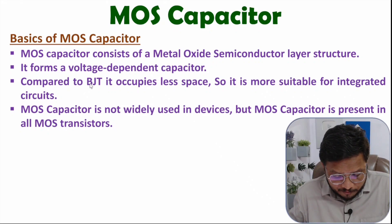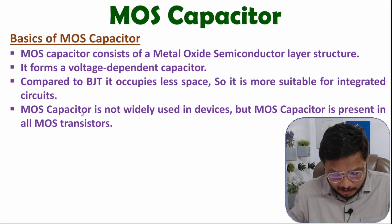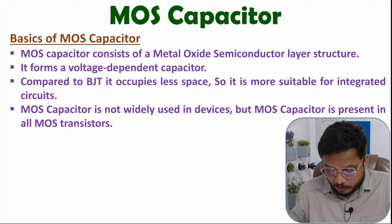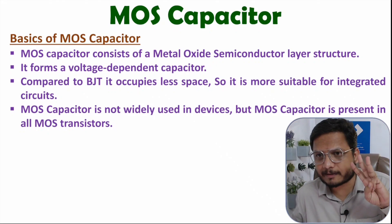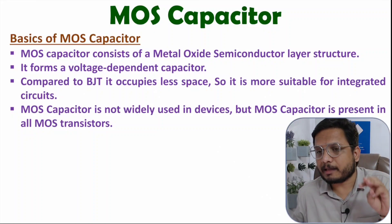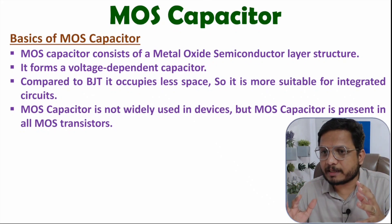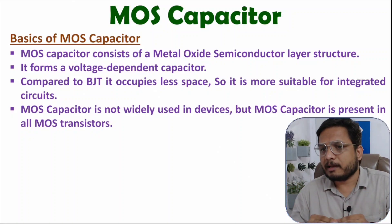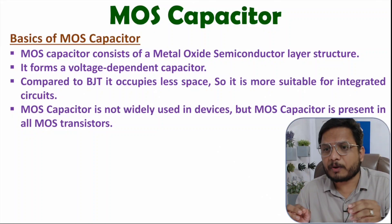Compared to BJT, MOS capacitor occupies less space. That is why MOS capacitor is more suitable in integrated circuits. We do not use this MOS capacitor directly in devices, but when you fabricate MOS transistors, this MOS capacitor is inherently present. So the basics should be clear: three layers — metal layer, SiO2 (oxide layer), and semiconductor layer — forming a voltage-dependent capacitor that is inherently integrated inside a MOSFET.